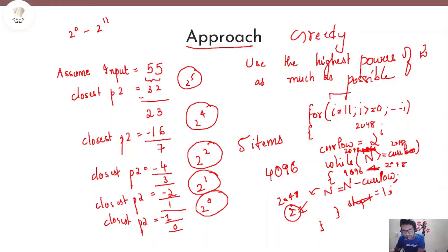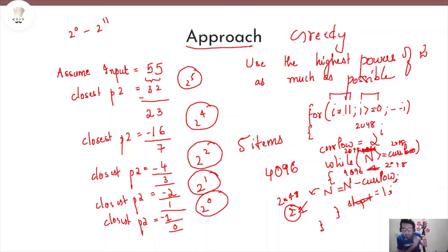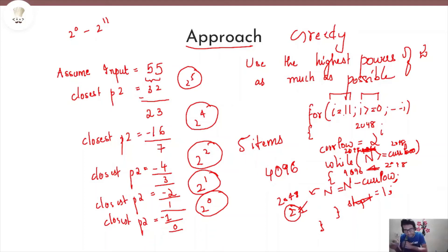We go from the highest power of 2 to the lowest — these are all the prices of the menu items in CL's shop from highest to lowest. We try to use the highest price as many times as possible to reduce n, because this helps us find the minimum number of menu items. At the end of this whole for loop and while loop, we have the solution — the minimum number of menu items — stored in the variable steps.